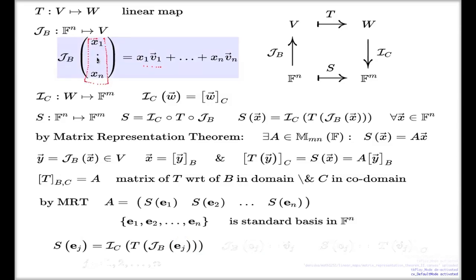That's how it's going to look. So what I'm saying is that the jth column of the matrix we're going to look for is simply the coordinates of the action of T on the jth element of the basis in the domain with respect to the basis in the codomain.